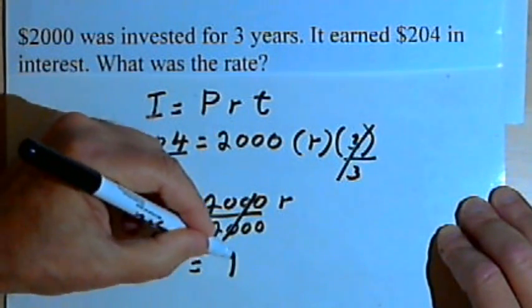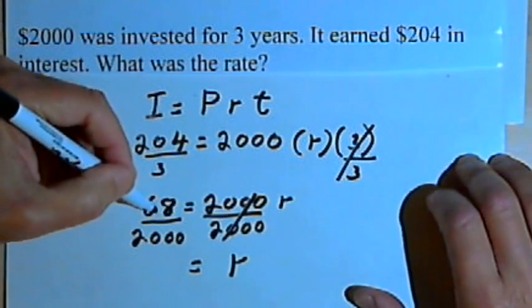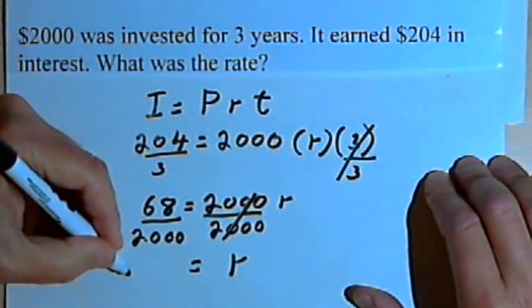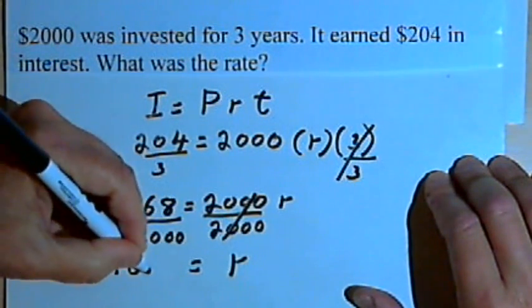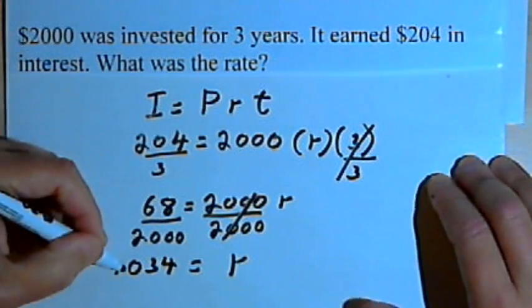I'll have just the R on the right side, and 68 divided by 2,000 is 0.034. So this is the rate.